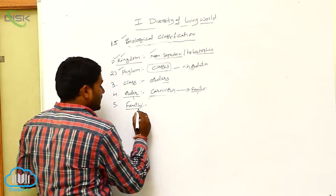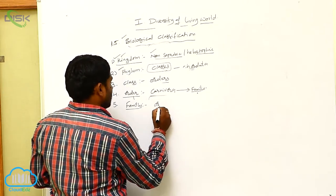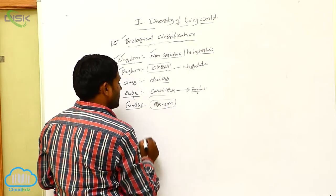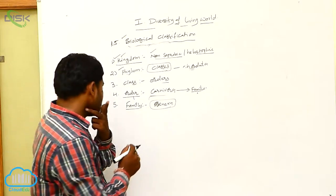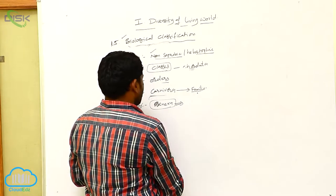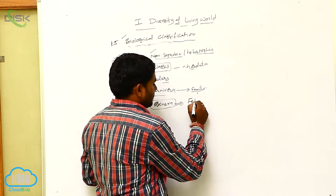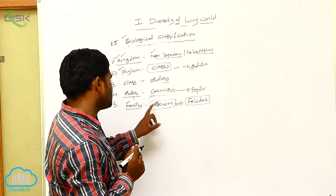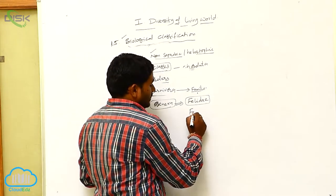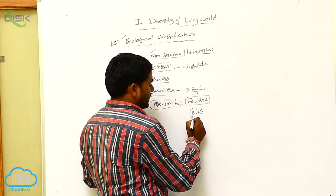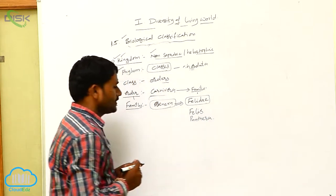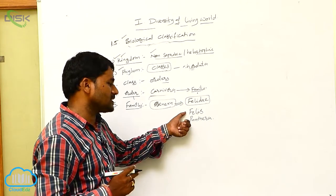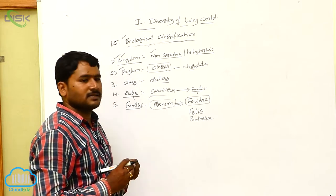Family is a group of one or more closely related genera. For example, if you take the family Felidae, the Felidae family is made up of different genera. There are two genera we can identify: Felis and Panthera. So Felis is one genus and Panthera is another genus.